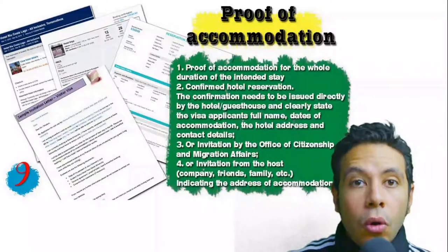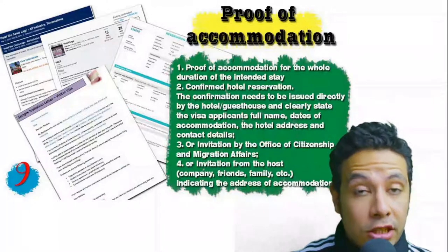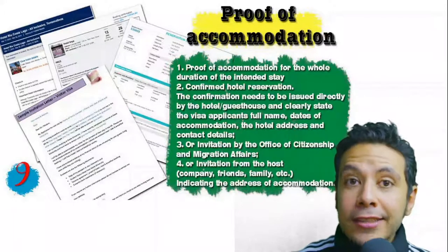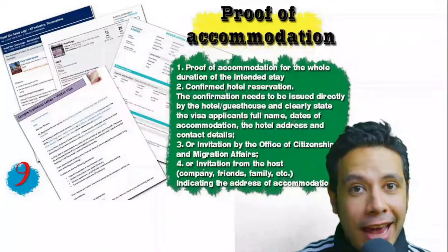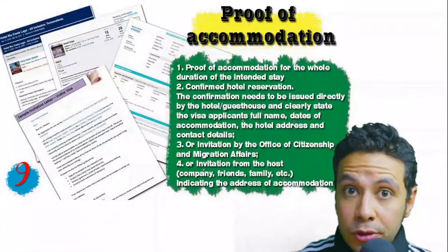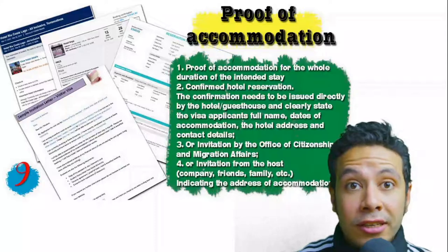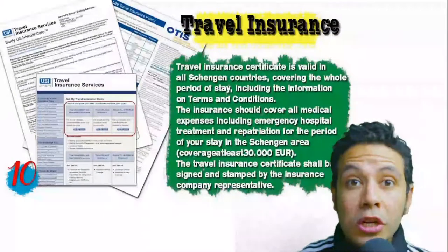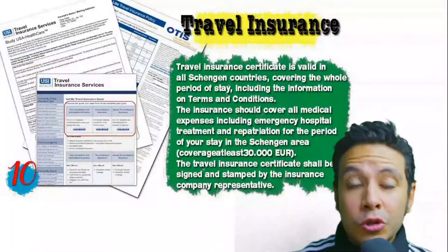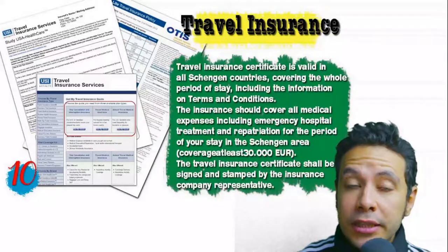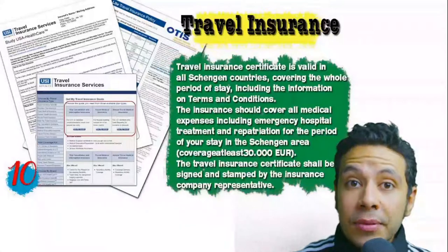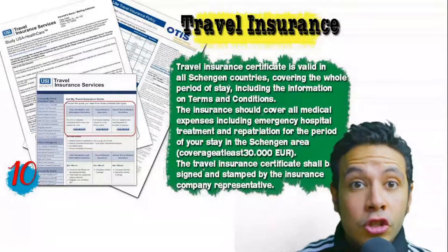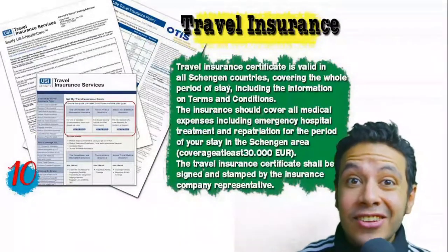You will also need to provide proof of accommodation — a confirmed hotel reservation, an invitation from a host, or an invitation from an organization you are visiting. For a hotel or hostel, an initial booking is usually acceptable, though in some cases a confirmed booking may be needed. The hotel name, address, and contact number must be mentioned. If invited by a person, the letter of invitation should either be mailed directly to the embassy or submitted by you along with a copy of the inviting person's passport. Many countries, especially Schengen area countries, also require travel insurance with coverage of at least 30,000 euros.